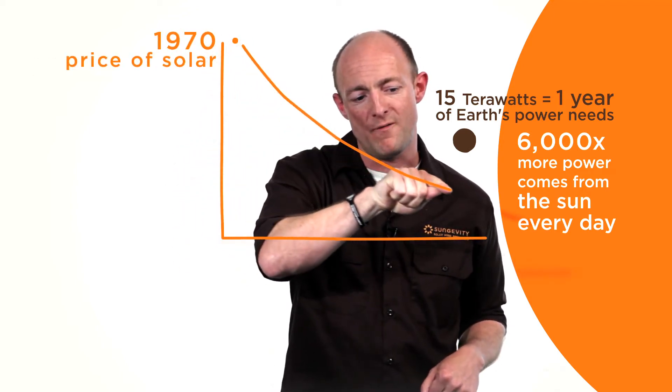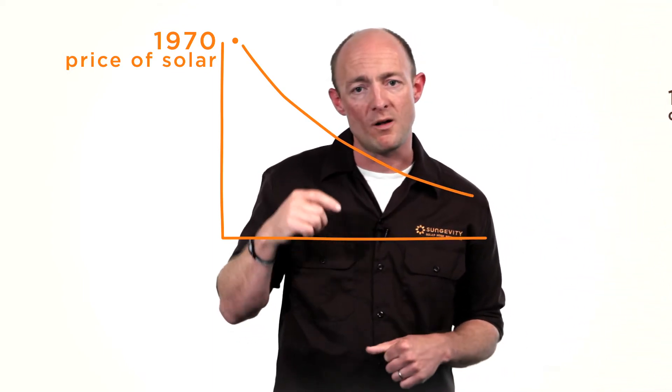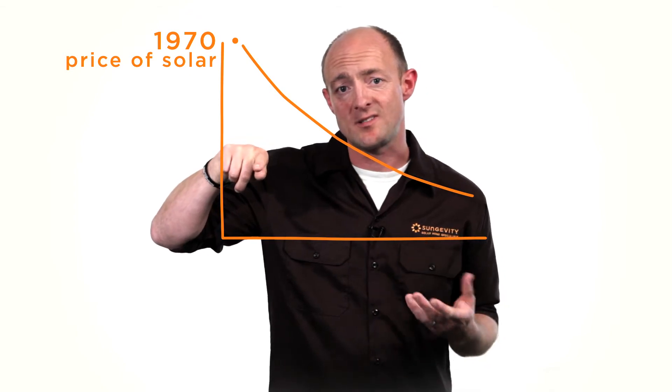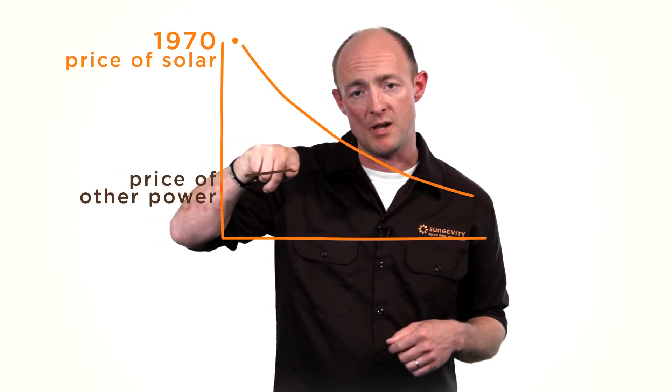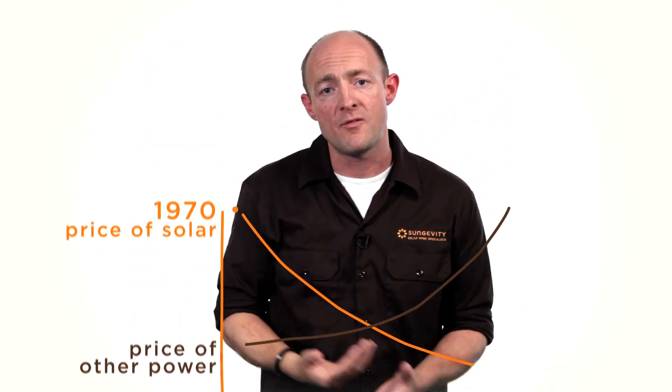Meanwhile, the cost of electricity has risen by 5% per annum. So you can see these two lines cross. And the Department of Energy has said that two-thirds of all US homes should be lower cost with solar by 2015.